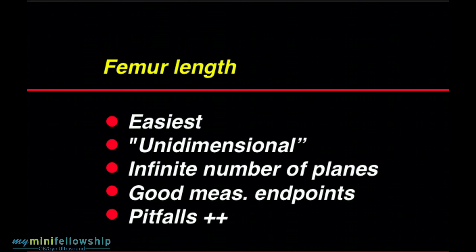We'll start with the femur length because, in my opinion, it is the easiest of the measurements. Why is that? Because I think of it as a unidimensional measurement. Basically, once you line up on the long axis of the femur, that is the only plane that is important. Once you have lined up along the long axis of the femur, you could potentially rotate the transducer through a 360-degree arc along that line, and you would obtain exactly the same measurement in each increment of that 360-degree rotation. Absolutely nothing about the measurement would change, which means that an infinite number of planes of section are available to give us the measurement that we want.